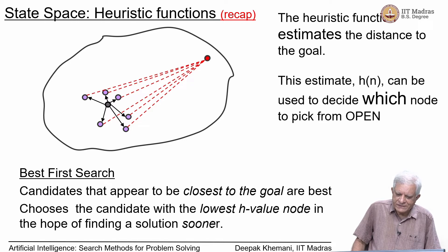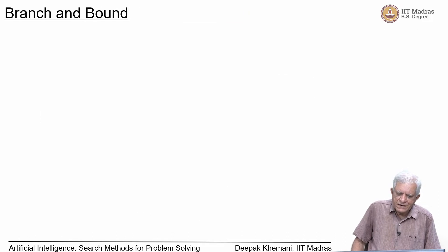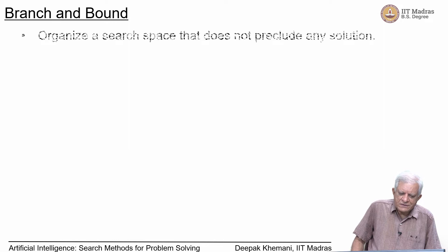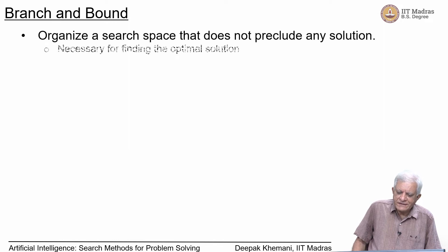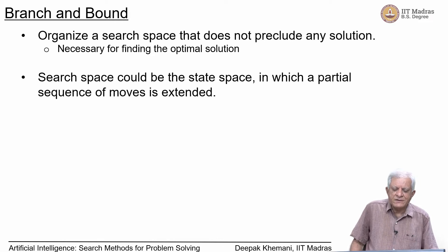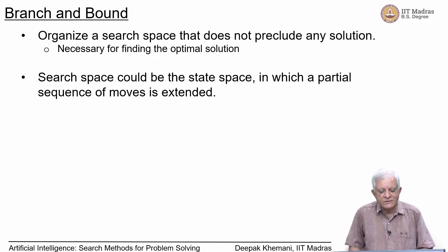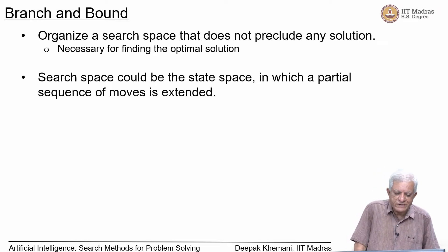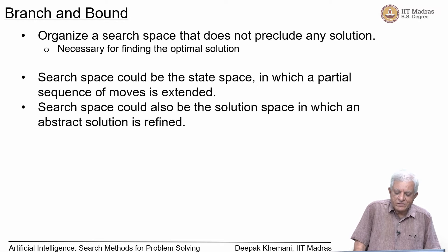The objective of heuristics was to find the solution faster; now our objective is to find the optimal solution. Branch and bound works as follows: organize the space in a way that does not preclude any solution, because we want to guarantee optimality — that is a necessary condition. Local search, for example, always precludes possible solutions. The search space could be the state space in which a partial sequence of moves is extended, or a solution space in which an abstract solution is defined.